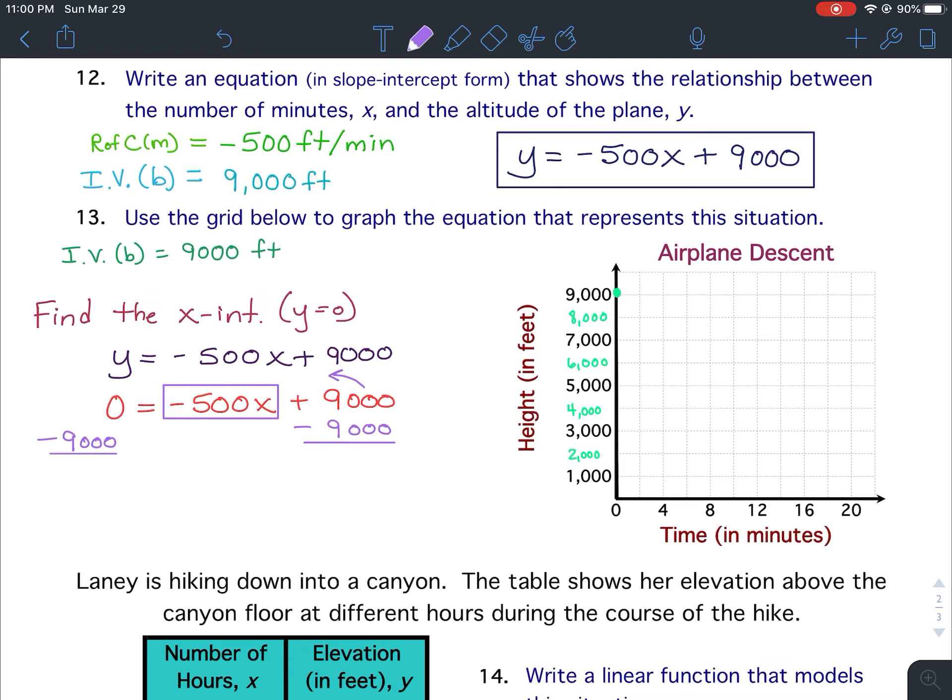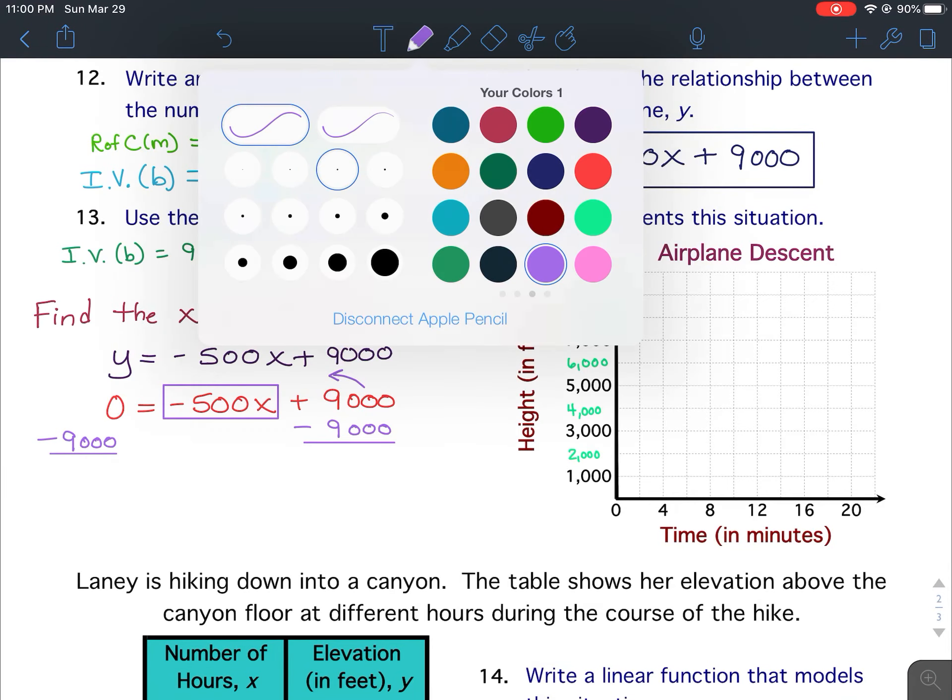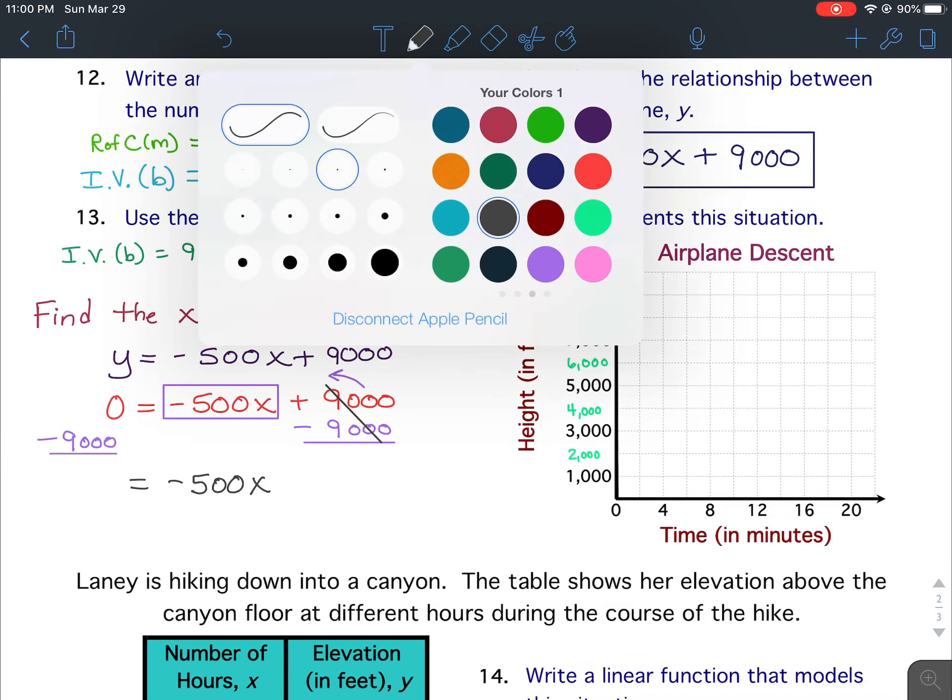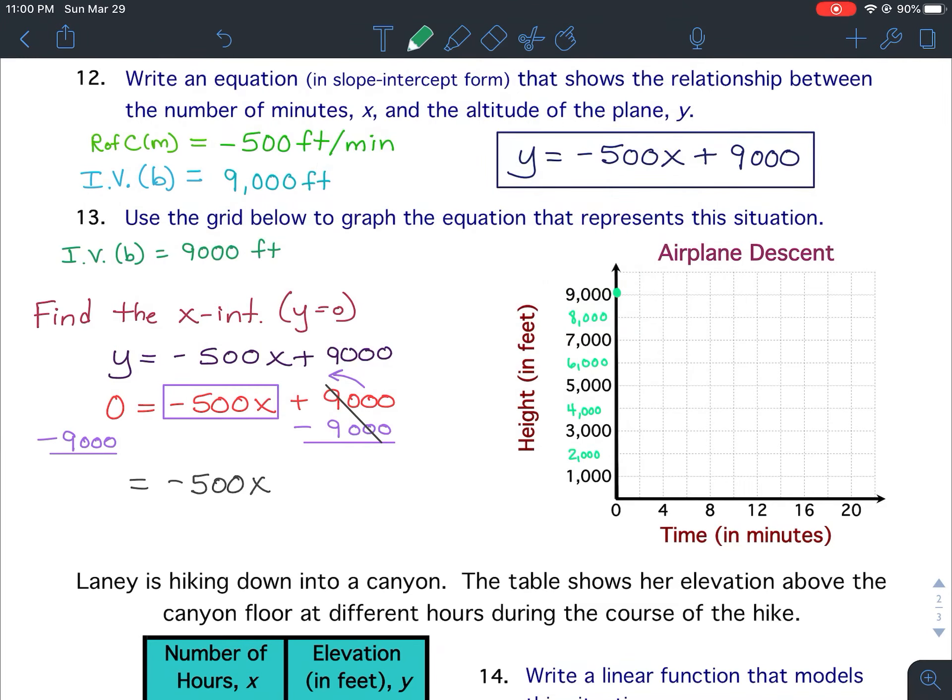You actually could have taken the x-term to the other side, and it's probably what I would have done. But since we're used to boxing our variable term, I just kept it that way. Okay, I'm going to have you finish this problem. Go ahead and divide and find whatever x equals. And whatever you get for x, that's the point over here that you will graph.